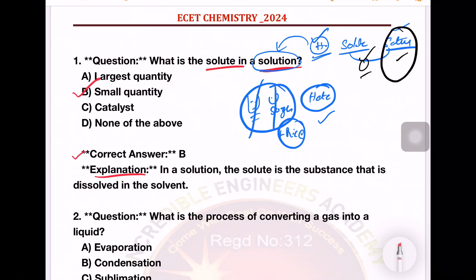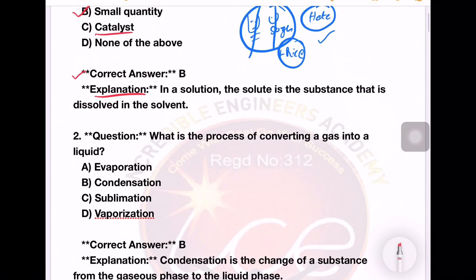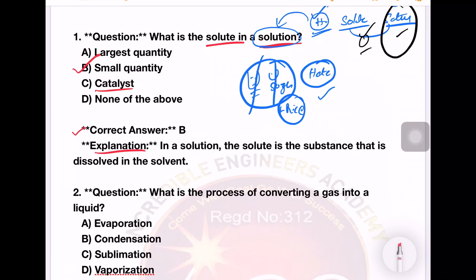What is a catalyst? A catalyst is a substance added to a chemical reaction — for example, adding wood as a solid shape — that affects the chemical composition of the reaction.